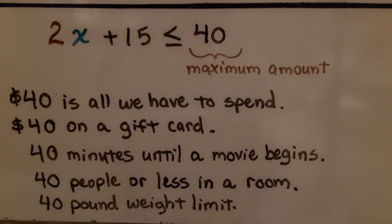If 40 is the maximum amount, we can think of a verbal description for this two-step inequality as $40 is all we have to spend. Or, $40 is all we have on a gift card. We only have 40 minutes until a movie begins. There's 40 people or less in a room. Or, there's a 40 pound weight limit.